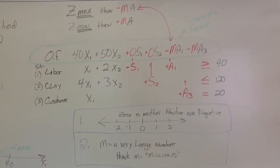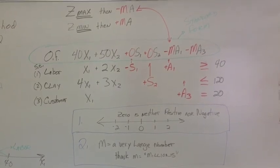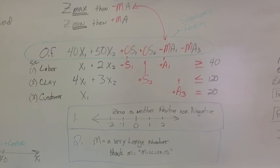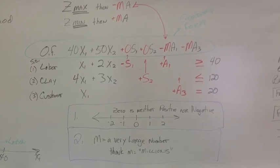And this is one of the key things. You have to keep track if it's a max or a min, so you know if to add or subtract your M from your artificial variable.